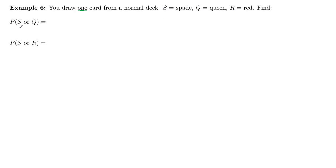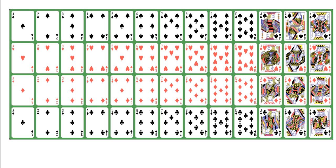We want to find the probability that it's a spade or a queen. First let's see if the events spade and queen are mutually exclusive. Is there any overlap? Our spades are right here, and our queens are right here. We can see that there is one card in the overlap, the queen of spades.